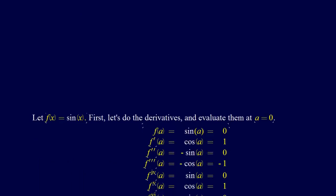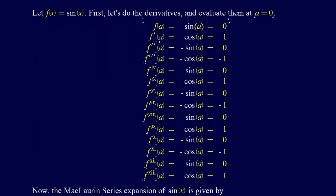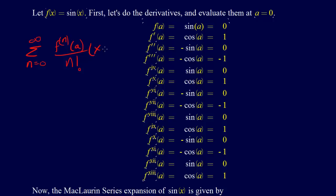As I did before, I've sort of typed all this out. The first thing that we need to do — if you'll recall — our equation was the sum from n equals 0 to infinity of f to the n of a, all over n factorial, times x minus a, all to the n. Since this is our equation, one of the first things we need to do is figure out what this term is — we need to evaluate our derivatives.